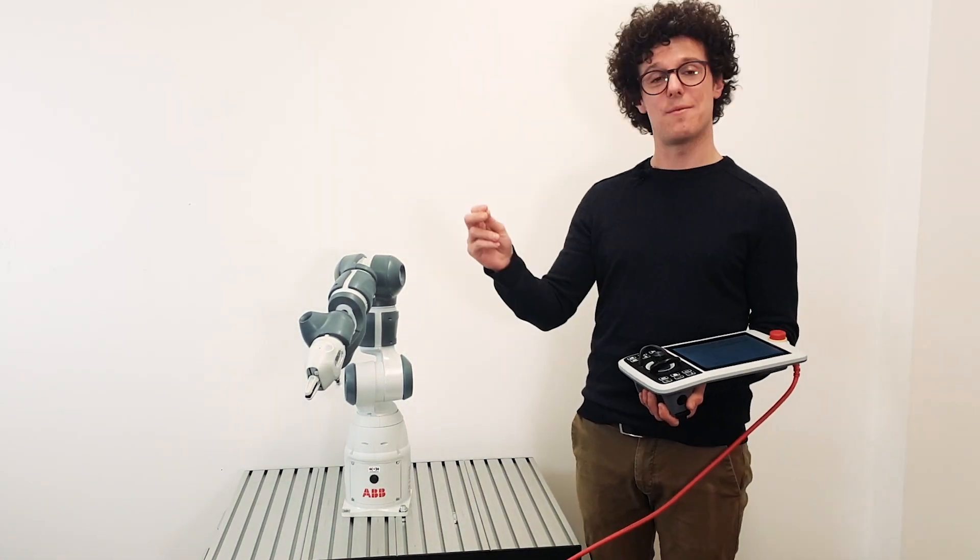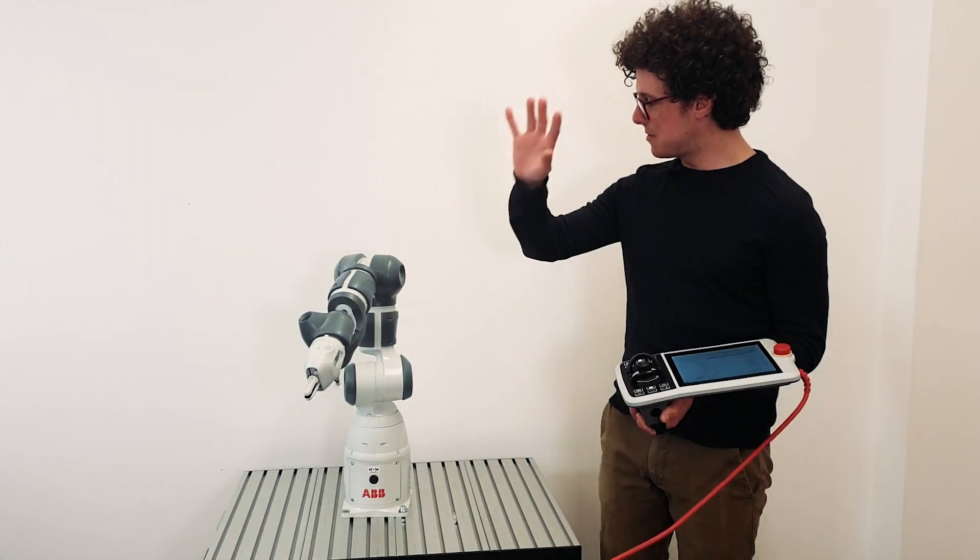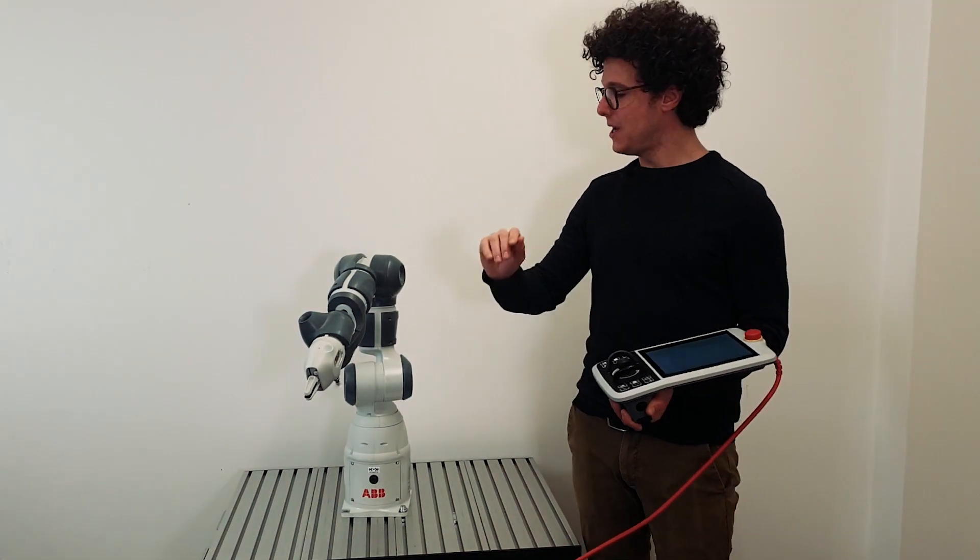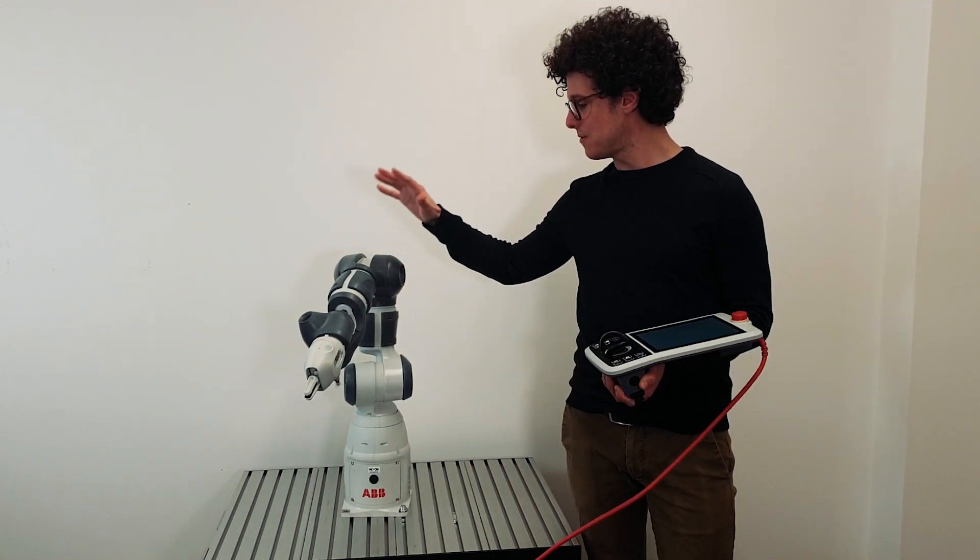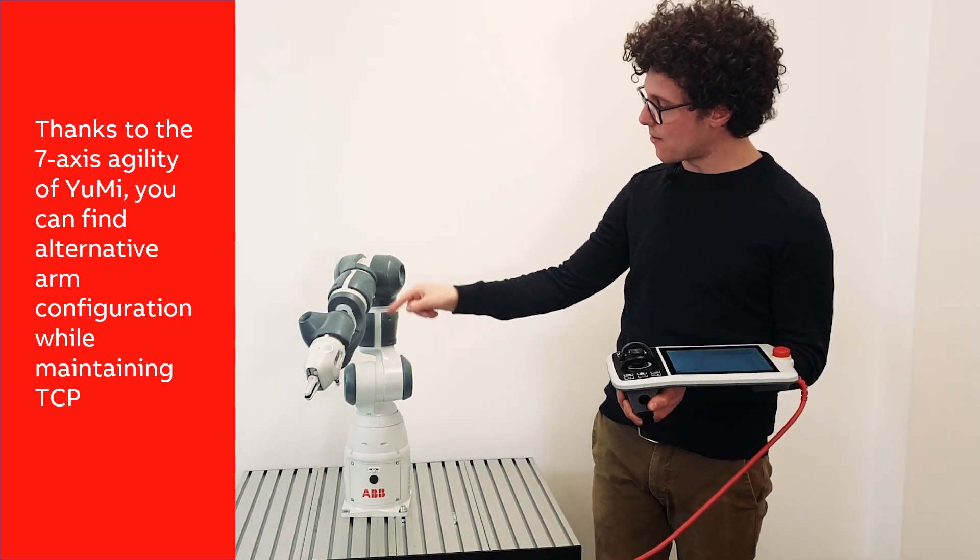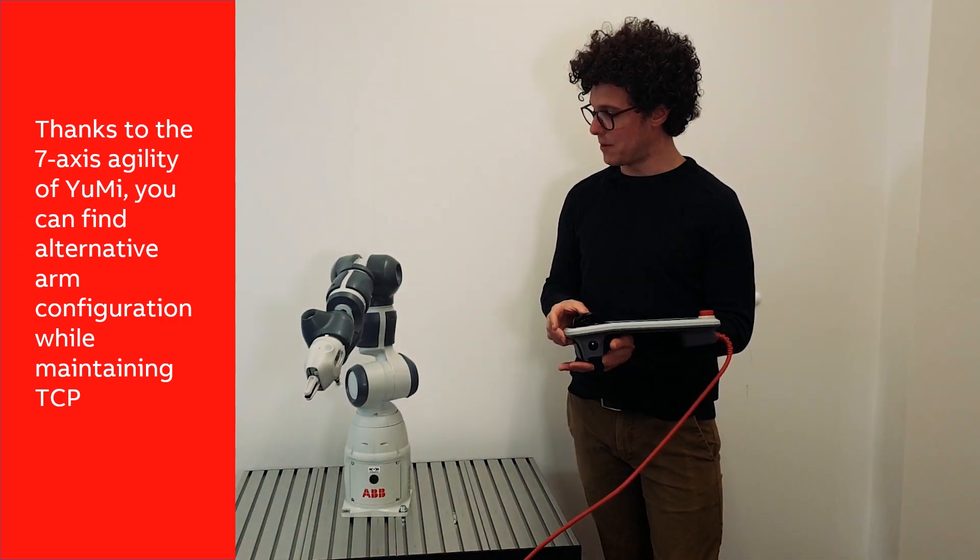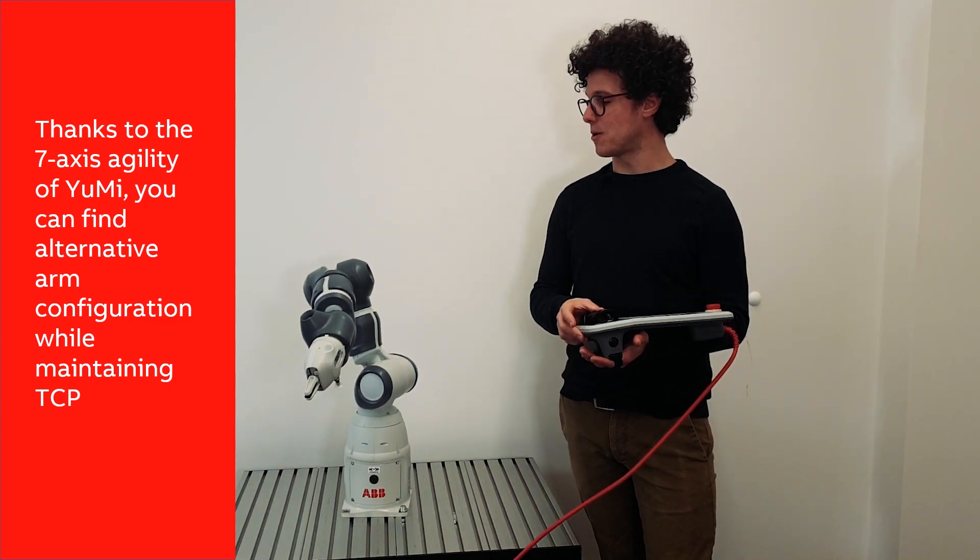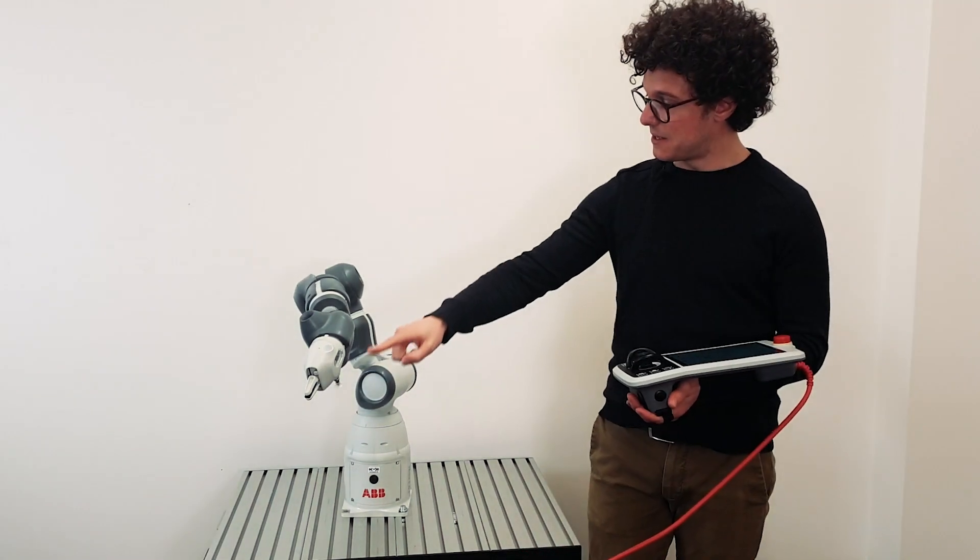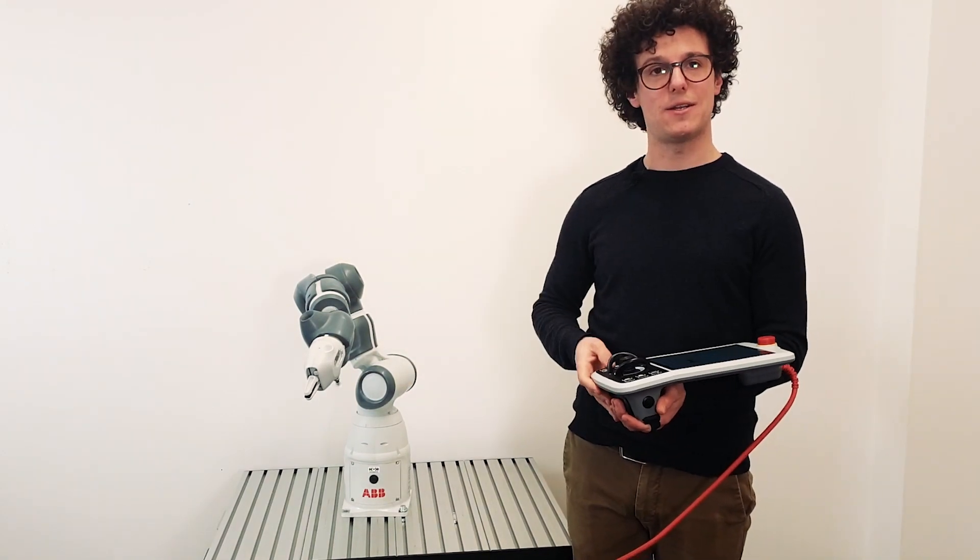by using an ABB YuMi, we have two main advantages. The first one specific for this robot is that we have a seven degrees of freedom robotic arm, so a redundant arm. And here you can see we are in a wrist singularity case, but it's easy with the YuMi to find an alternative arm configuration that grants the same TCP position in space while not being in a wrist singularity.